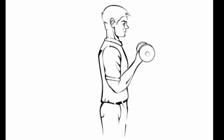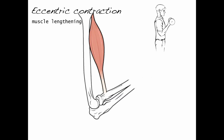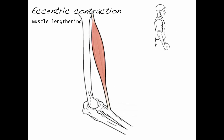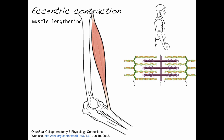Let's take a look at the lengthening contraction. We call this an eccentric contraction, where the muscle is lengthening during the contraction. What's happening at the sarcomere level is that the shortened sarcomere is lengthened, so that you go from a myofibril that looks like this to one that looks like this.